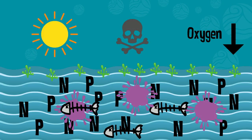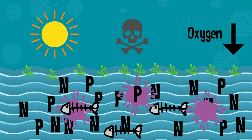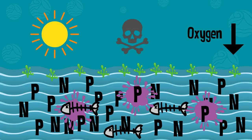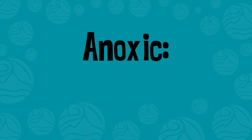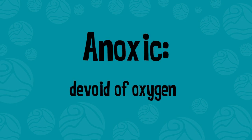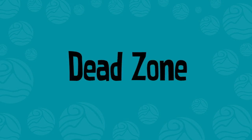Through decomposition of these dead organisms, more nutrients are added to the water body. The cycle of low oxygen, death, and decomposition may continue until the body of water is entirely anoxic — devoid of oxygen — also called a dead zone.